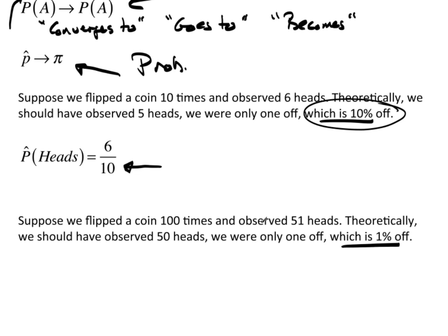You can see being off by one when I have a small sample size has a much bigger impact. Being off by one or even two or three or four when I have a bigger sample size has a smaller impact. That's the way the law of large numbers actually works. Being off a few here and there when you have a large number of trials has a smaller impact, which means you're getting closer and closer to the theoretical probability.